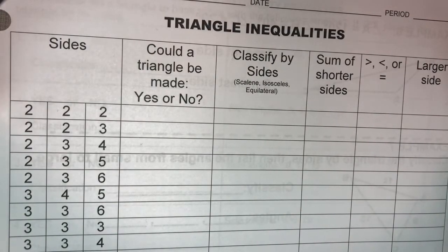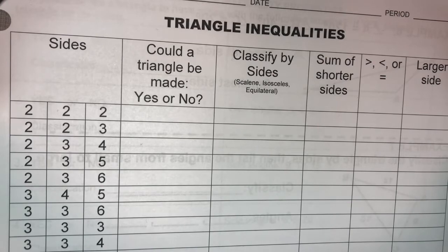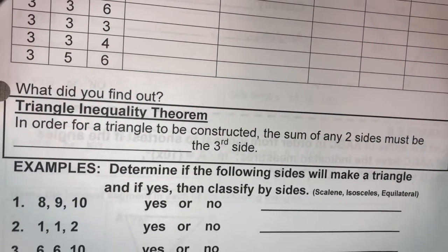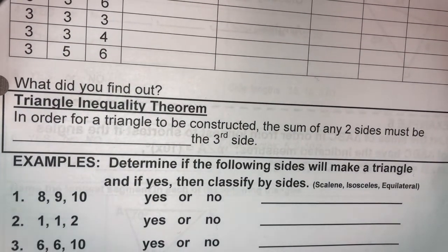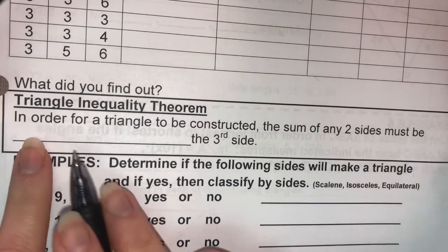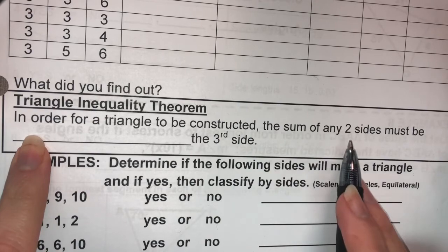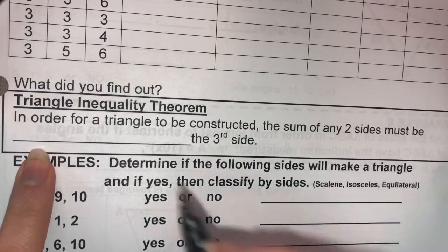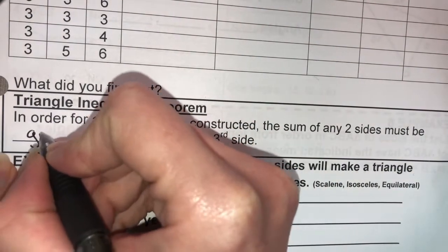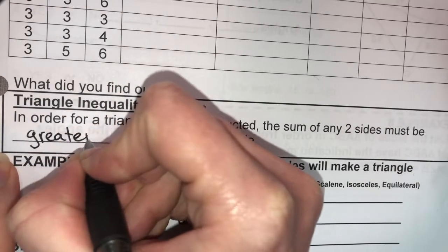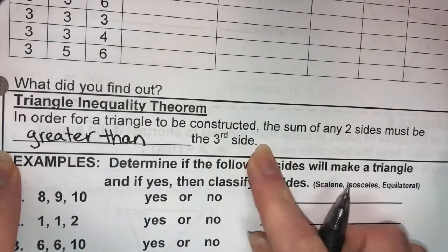Today's lesson is called triangle inequalities. The first thing we're going to figure out is if you could make a triangle or not given different lengths of sides. In order to figure this out, we're going to need to know the triangle inequality theorem. In order for a triangle to be constructed, the sum of any two sides must be greater than the third side.